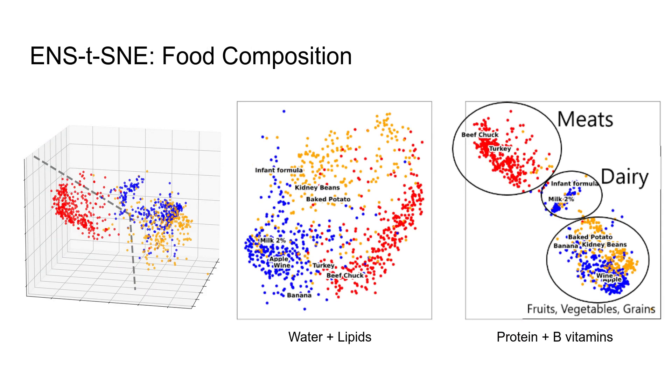We then use a subspace clustering algorithm to find interesting subspaces which contain different clusterings. Using ENS-t-SNE on the two subspaces, the first which consisted of waters and lipids, and the second which consisted of proteins and B vitamins, we see that in the first image, the three clusters are well maintained, though they are mixed and not well separated, indicating that this subspace is important for defining the high-dimensional clusters.